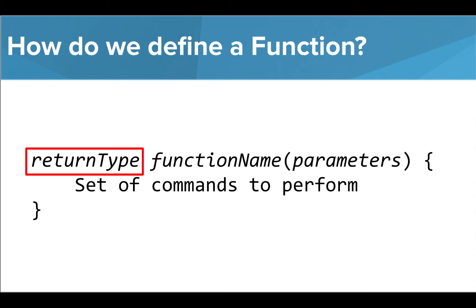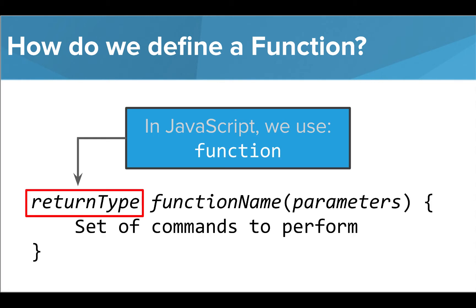The one thing that's different in C++ from many other languages is the first keyword we use to define a function. In JavaScript, we use the word function. In Python, we use the word def, but in C++ and with Arduino, we will use a different keyword based on the type of value we want our function to return.